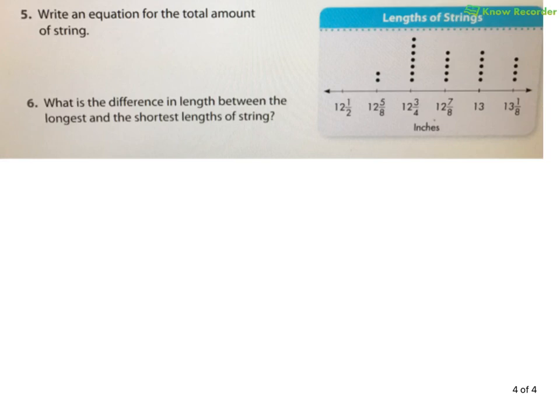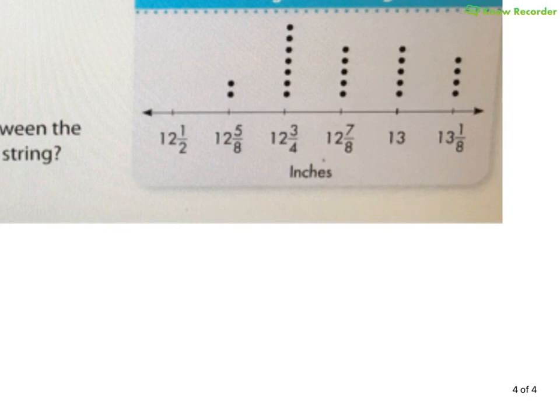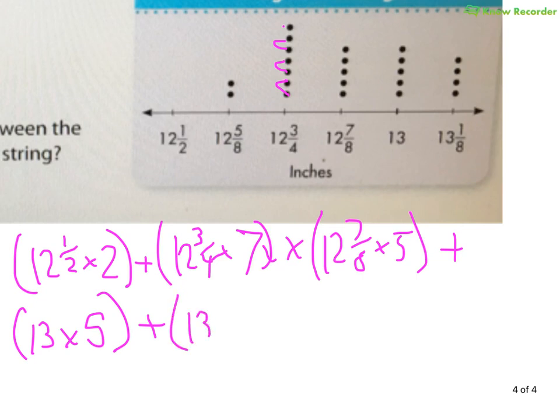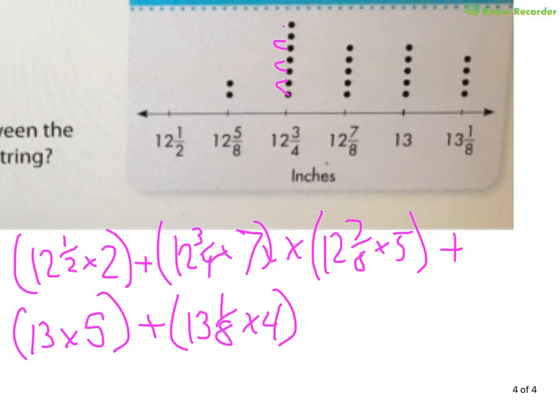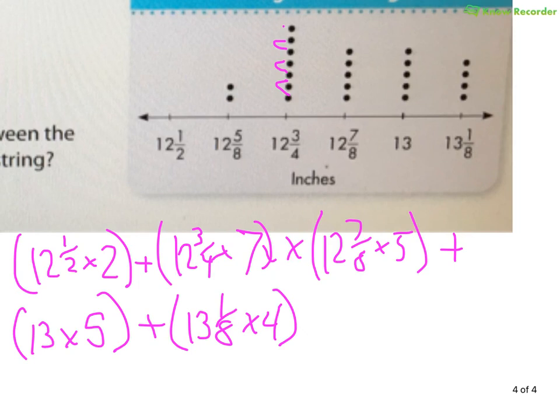So, again, we're writing an equation for the total amount. They love this question. So what do I have? Well, I have to make it bigger. Because I need to be able to read it. So, again, I have twelve and a half. And I have it twice. I have twelve and three quarters. And I have it two, four, six, seven. Seven times. I have twelve and seven eighths five times. I have thirteen five times. And I have thirteen and an eighth. Four times. I don't remember if they asked for an expression or equation. So let's check. Always check your work. Write an equation. So I better make sure I write an equation. So it's an equation. I need an equal sign and a variable.